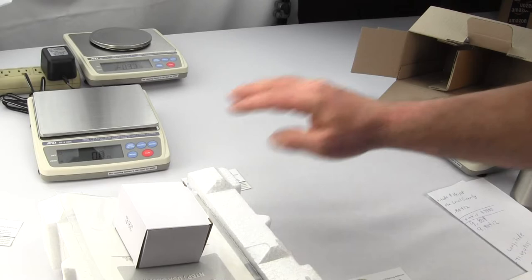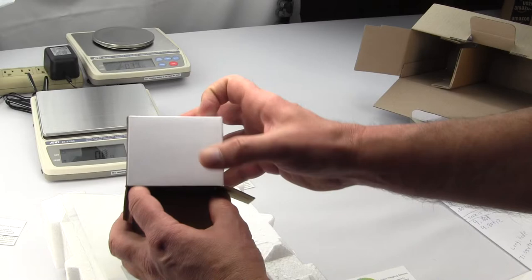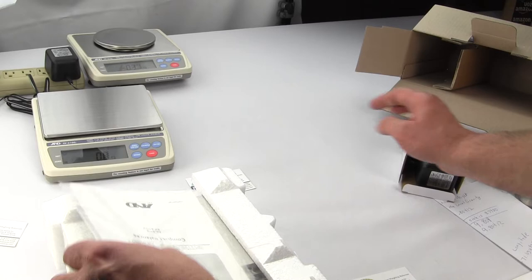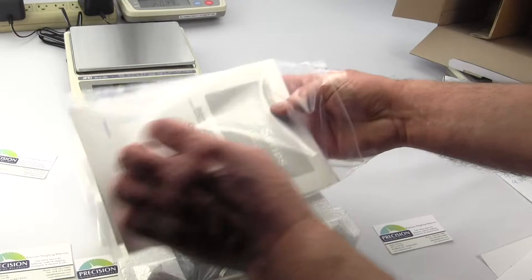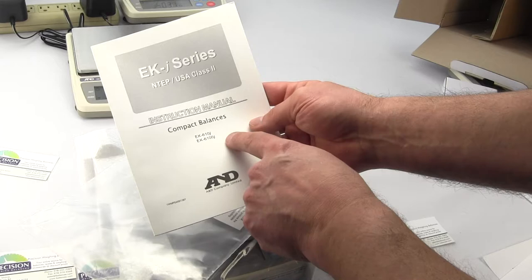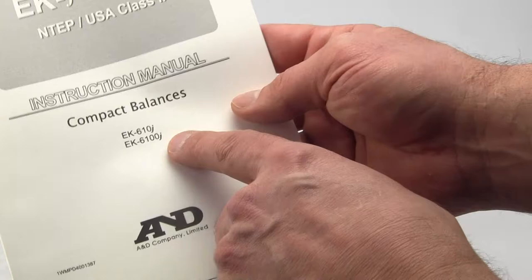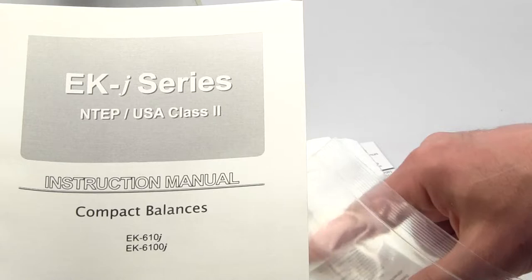So what do we get? We got an AC adapter and we only sell in the USA so these are 110 volt AC adapters. You have the A&D manual. The manual you'll see it's for the EK610J or EK6100J and these are legal for trade for the US market. So this is the manual for that and then you also have a warranty card.